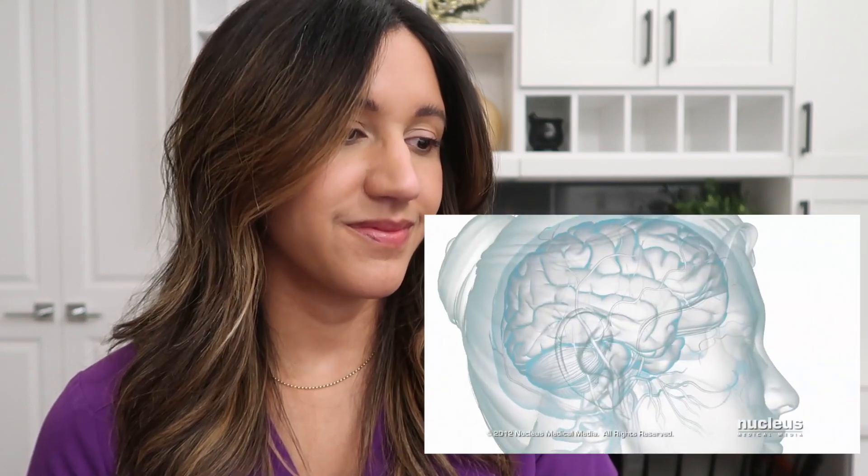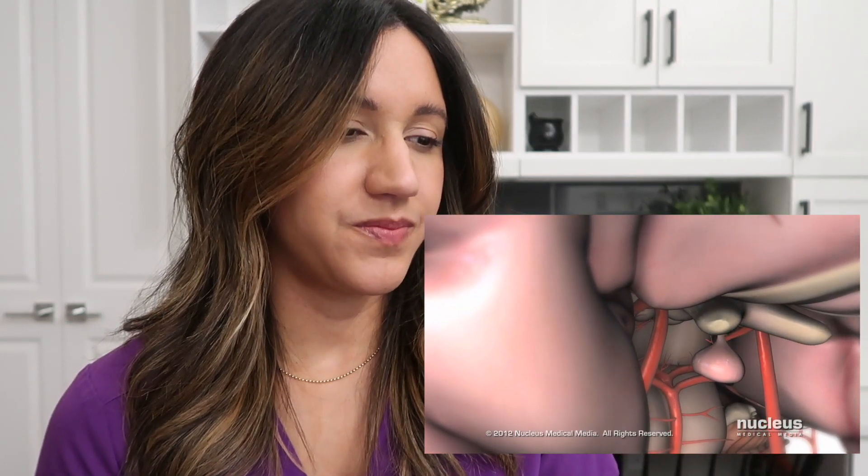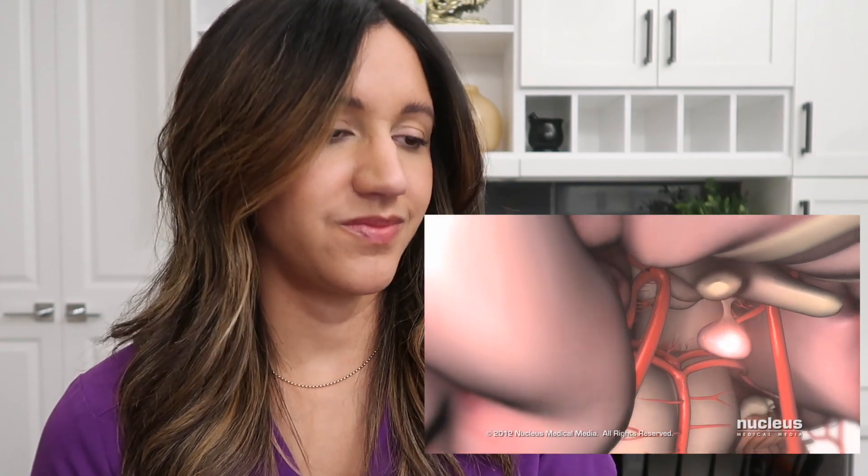Around day 12, the follicle secretes a large amount of estrogen into the bloodstream. When the estrogen reaches the hypothalamus and the pituitary gland in the brain, the anterior, or front part of the pituitary gland, releases a huge surge of luteinizing hormone into the bloodstream. Around day 14, luteinizing hormone causes the follicle to undergo a sudden growth spurt.